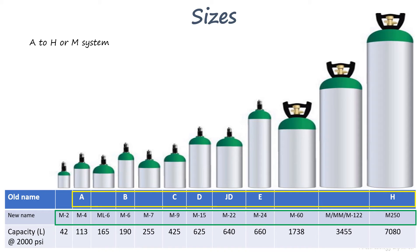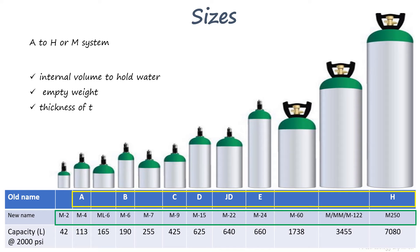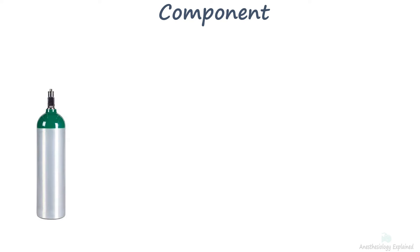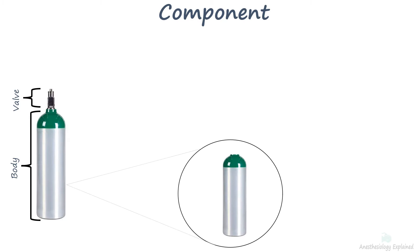Other important characteristics of cylinder sizes are its internal volume to hold water, its empty weight, and the thickness of the cylinder body. A typical cylinder consists of a body and valve. The body has a body, shoulder, neck, and base.